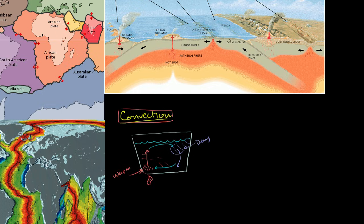Now, the reason why we think the plates are moving is because we think that there are similar types of convection currents in the asthenosphere, in the mantle, in the more fluid part of the mantle.